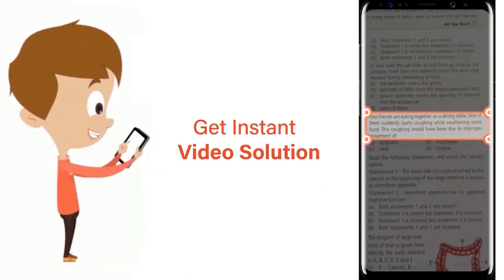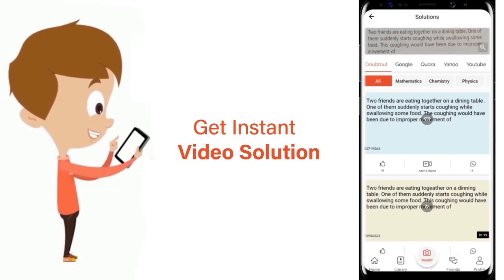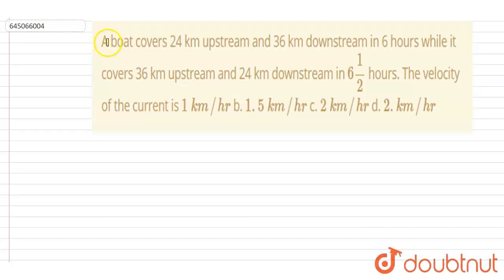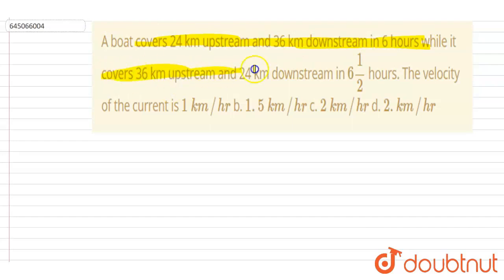A boat covers 24 kilometers upstream and 36 kilometers downstream in 6 hours. If it covers 36 kilometers upstream and 24 kilometers downstream in 6.5 hours, find the velocity of the current.